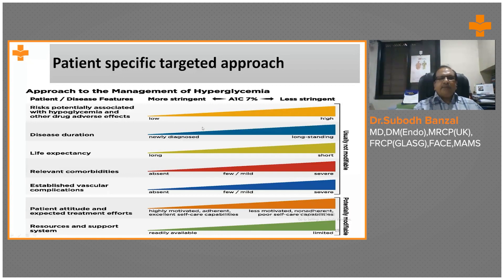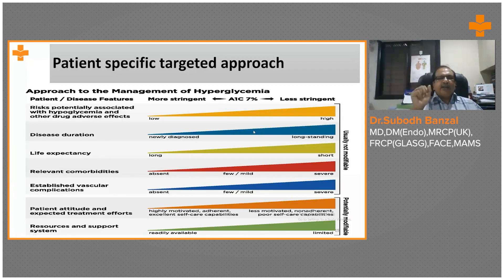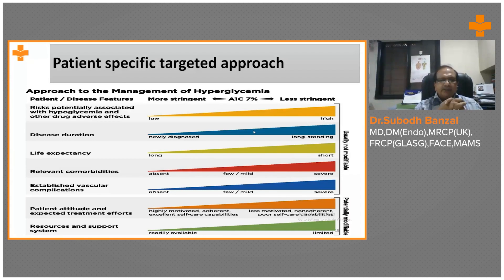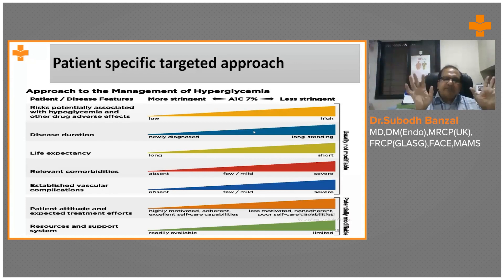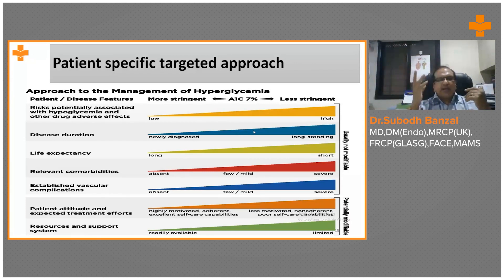Duration of diabetes — if duration is more, long-standing diabetic, you could be late and relaxed. But for a newly detected diabetic, one has to control diabetes well because they have to live long with diabetes and that can create problems. Life expectancy — those who have lesser life expectancy, at age of 80, sugars around 200, I am comfortable.